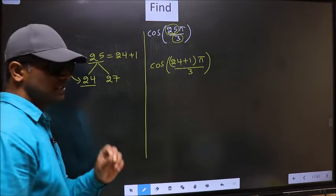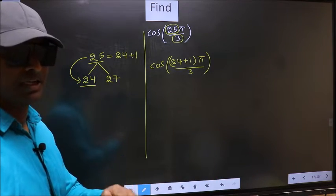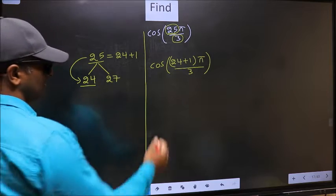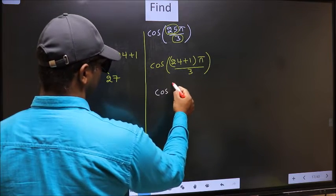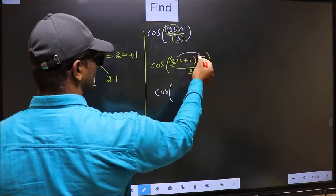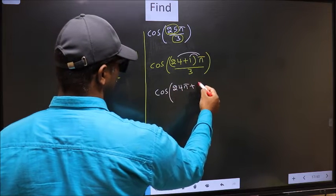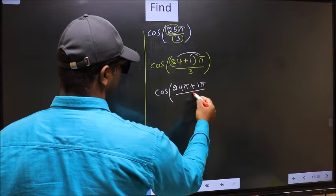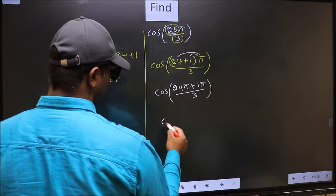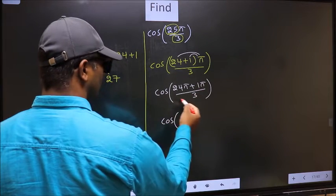This is your step 1. Next, cos. Now you should open the brackets. You get 24π plus 1π by 3.